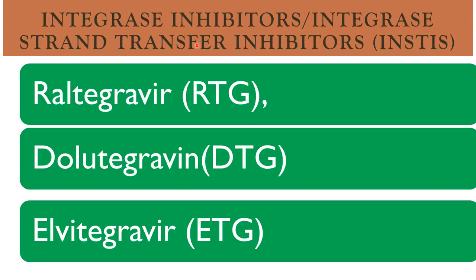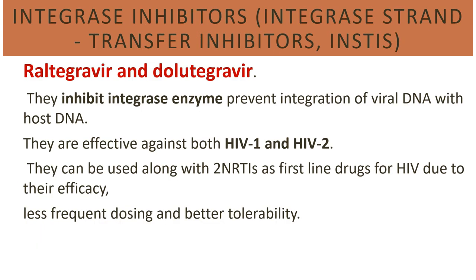Integrase inhibitors include raltegravir, dolutegravir, and elvitegravir. They inhibit the integrase enzyme and prevent integration of viral DNA with host DNA. They are effective against both HIV-1 and HIV-2 and can be used along with two NRTIs as first-line therapy for HIV due to their efficacy, less frequent dosing, and better tolerability. Thank you for watching the video.